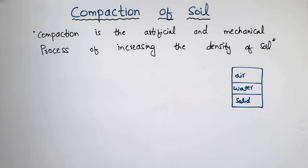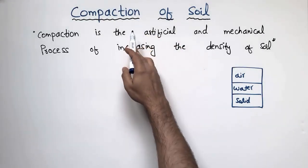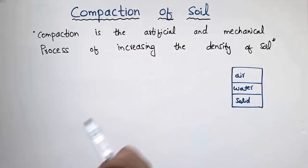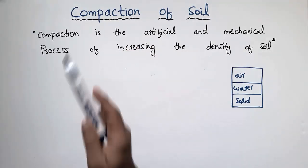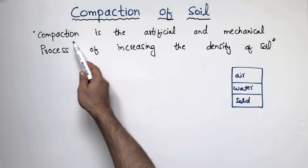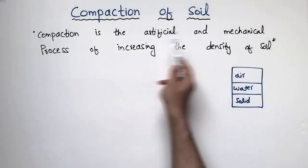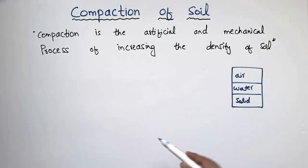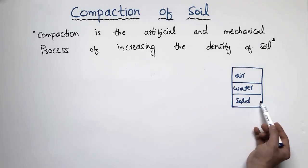Hello guys, welcome back to the Zone Engineering YouTube channel. Please subscribe to our channel for daily Zone Engineering videos. Today our lecture is about the compaction of soil. In this lecture I will try to explain what is compaction, why we need compaction, and what are the factors that affect the compaction of soil. Compaction can be defined as the artificial and mechanical process of increasing the density of soil.